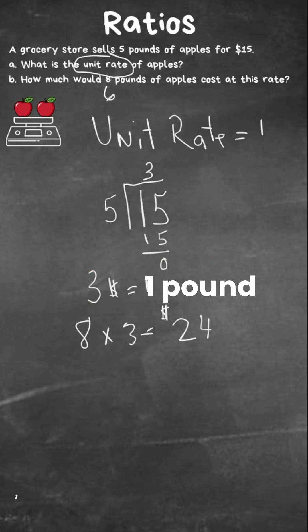What if we wanted instead of eight, what if we wanted six? We would just go six times the unit rate because remember the unit rate is how much it is for one. Six times three, and that is $18.